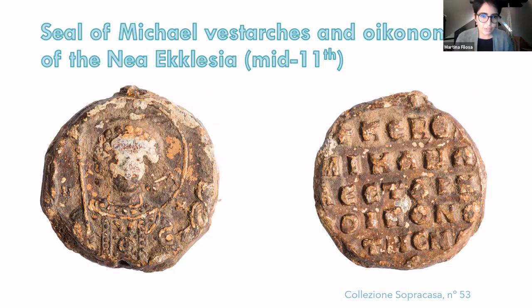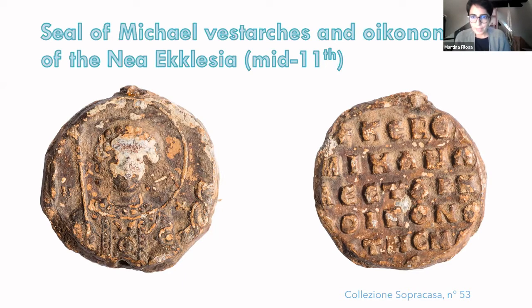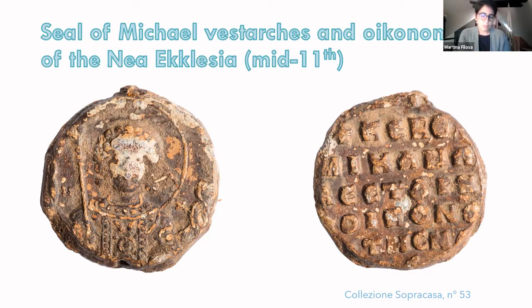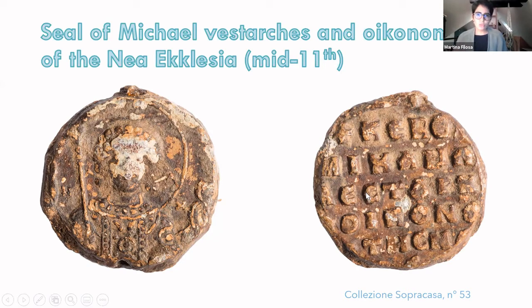In this case, on the obverse we have a very nice Archangel Michael. And on the reverse we have all the information that we need the seal to tell us. We have the name of the person — Michael — we have his imperial dignity and imperial title, which is Vestachis, and we have his office, which is the Economos of the Nea Ecclesia, so of the new church. And it is dated to the mid-11th century.